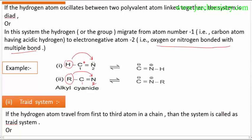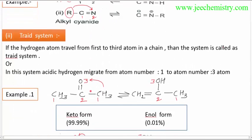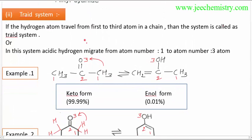This will be much more clear once we learn about the triad system — then we can differentiate between the diad and triad systems. In the triad system, the hydrogen atom travels from the first to the third atom in a chain. That system is called the triad system. In this system, the acidic hydrogen migrates from atom number one to atom number three.